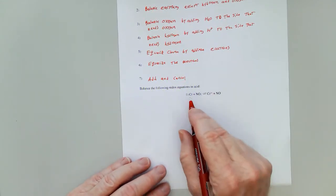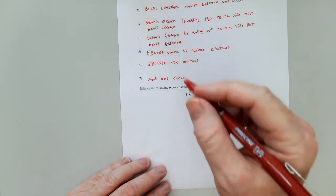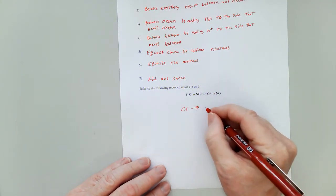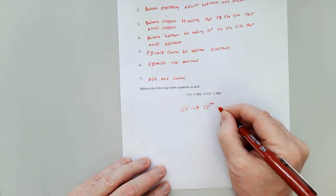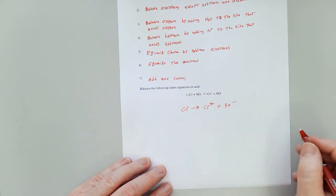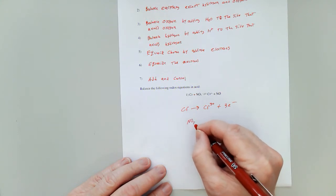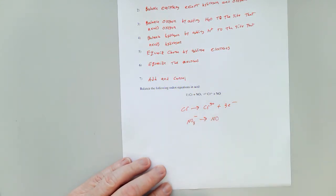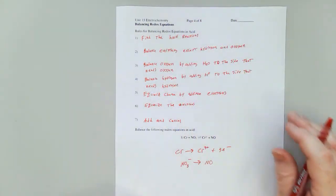So let's go and do this. Here's our reaction. Find the half reactions. Well, the first half reaction is Cr turns into Cr3+ plus 3 electrons. The next half reaction is NO3- turns into NO. And that's step number one of this process.